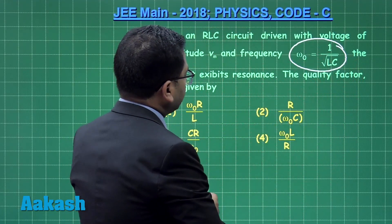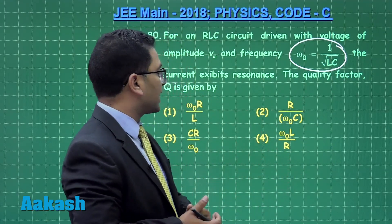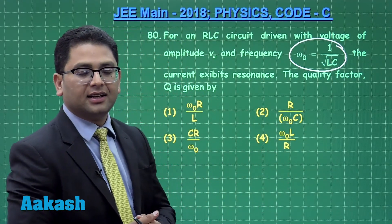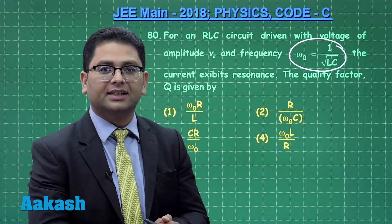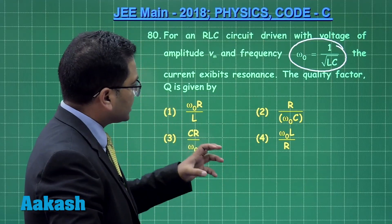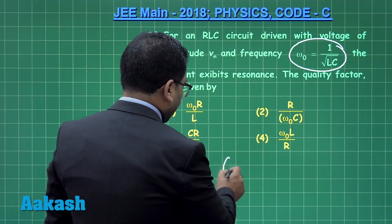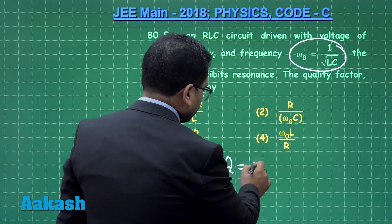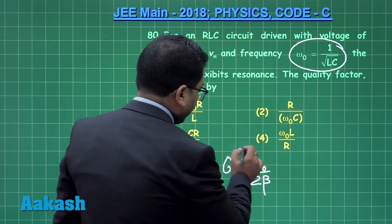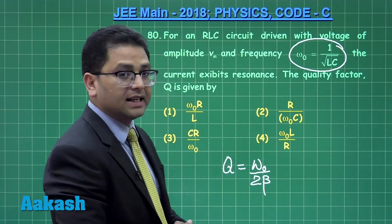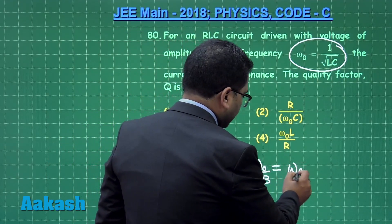Quality factor is a term with lots of significance in AC, but here we just calculate the definition. The value of quality factor is omega 0 divided by twice beta, where beta is the damping factor.